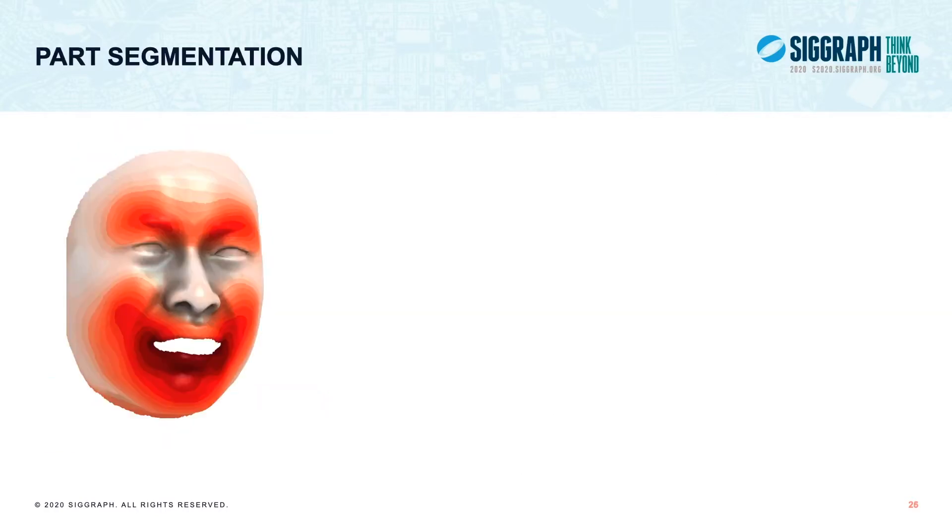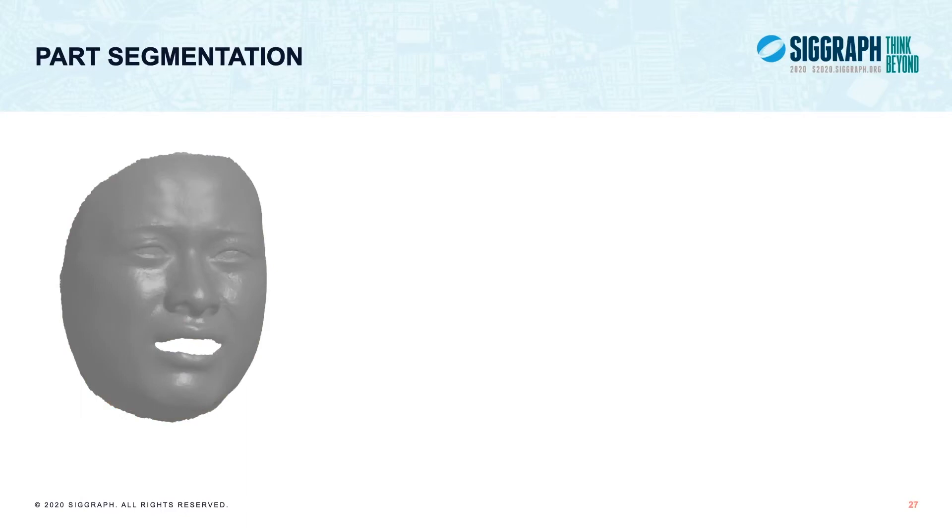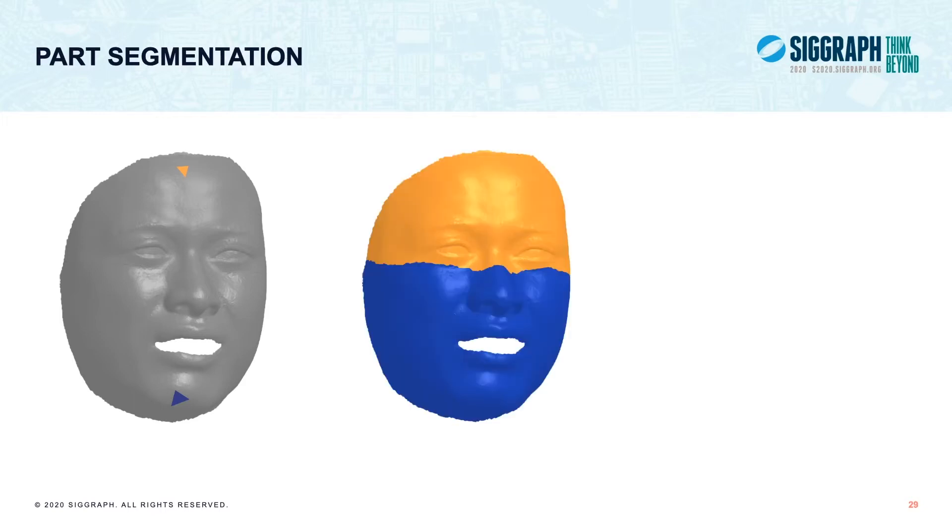Many deformable objects like faces have a localized region of deformation separable by near rigid boundaries. Here's an example plot showing the heat map of the average displacement visualized over the average face. The red color indicates areas that deform a lot throughout the animation, and the white color indicates more rigid areas. Specifically for faces, it's common to segment a head into the upper and lower face across the eye area. So how do we achieve such segmentation? First users can roughly indicate desired parts by specifying a seat triangle for each part. Our goal is then to assign every triangle in the mesh to some part.